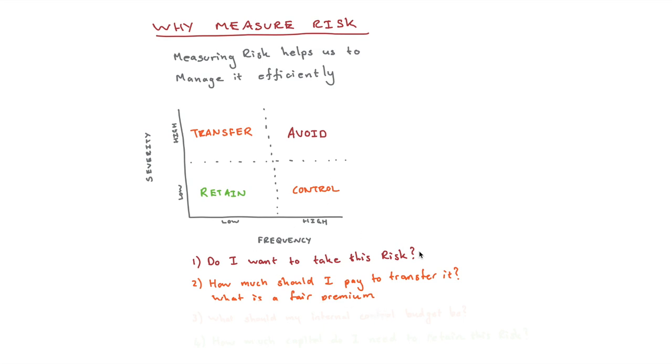Let's say we're coming to control, if we can measure risk, then we know how much should my internal control budget be. If these risks, maybe they're happening quite a bit, but they're not that devastating, then we don't need to allocate such a huge budget to it, we can balance the cost benefit of implementing internal controls. And then if we're retaining it, we can say, well, how much capital do I need to retain this risk? What should my liquidity or cash reserves be?